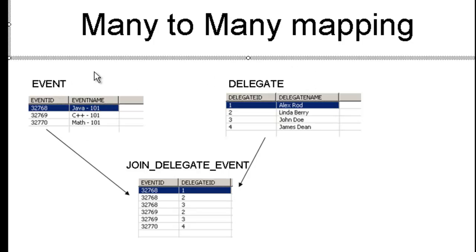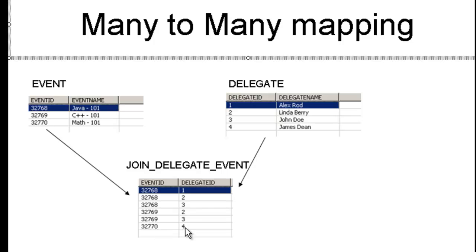The only way to create a many-to-many mapping between these two tables is to create a third table, for example, join delegate event. In the third table, I'll have two columns. Event ID 32768 will be attended by delegate 1, 2 and 3, and event ID 32769 is attended by delegates 2, 3 and 7. So this way we can create a many-to-many mapping between these two tables.